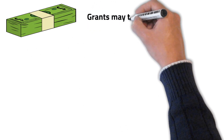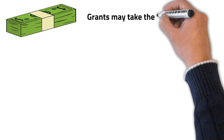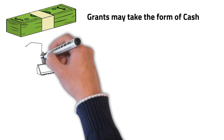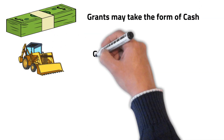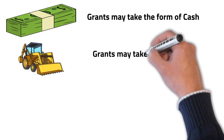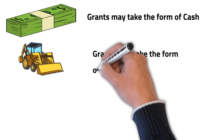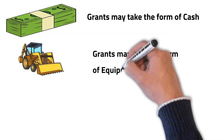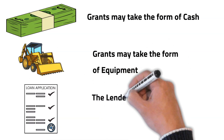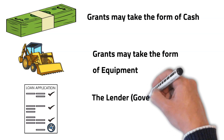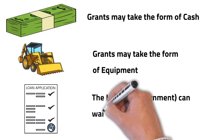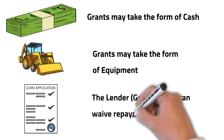The first one is where grants are given as cash to the owners of the businesses. Grants may also take the form of equipment, probably in the agricultural sector. Grants may also be in the form of forgivable loans. In this case, the lender, most probably the government, can waive repayment of an existing loan.